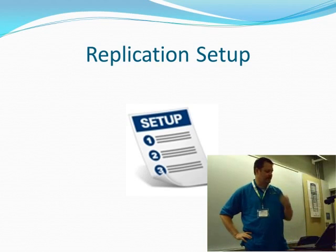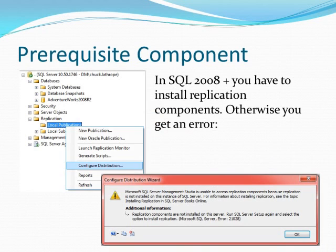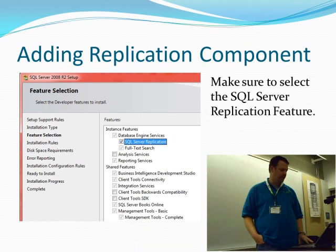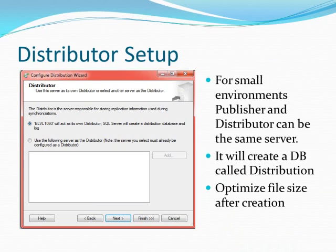So just setting up replication. The prerequisite is that SQL 2008 has an actual checkbox in the installation component. If you tried to configure distribution through a 2008-plus client, all you do is connect to your server, expand out replication, right-click on Local Publications to configure distribution. The very first step is you've got to get a distributor in your environment. If you hit this error, it's just a tiny little checkbox you may or may not have noticed on your setup — you just go back into setup and check that box.